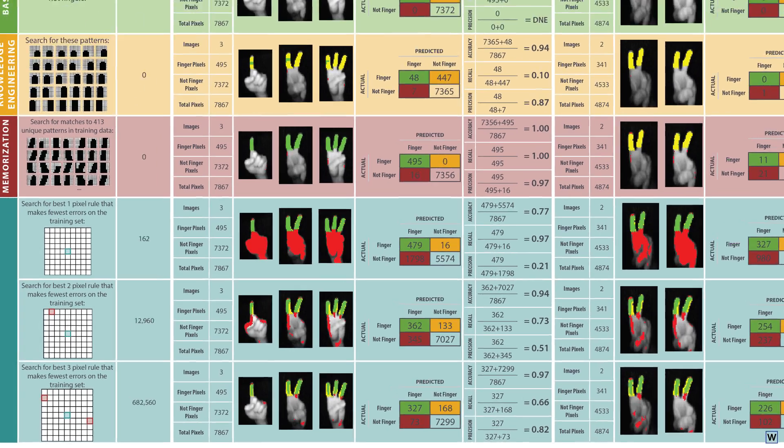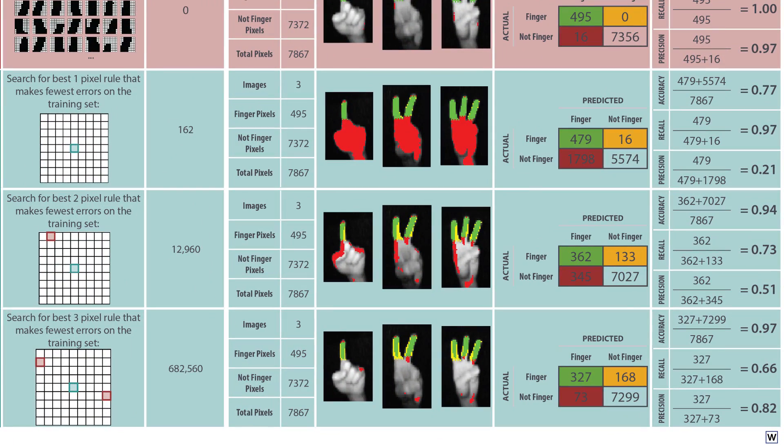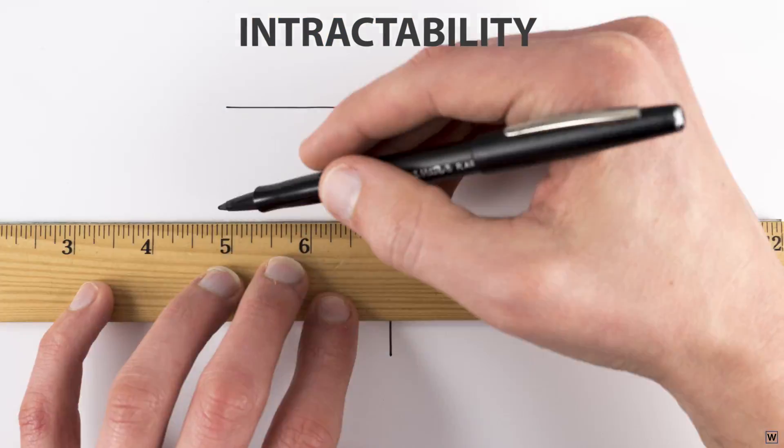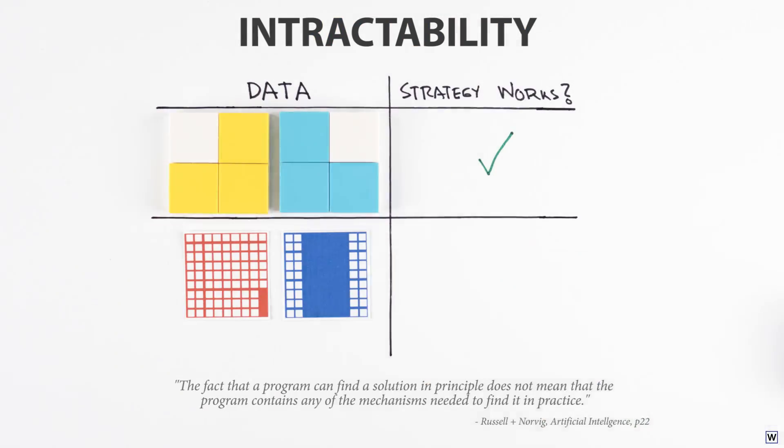We have found an approach that really does learn from data, but the nature of our algorithm means that we simply can't use it on the medium and larger problems we really care about. It doesn't scale. We of course aren't the first to bump into this problem. This failure to scale is known as intractability and prevented many early AI algorithms from scaling beyond toy data, contributing to the first AI winter.